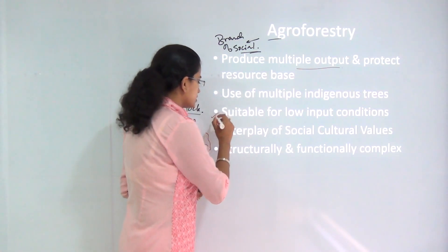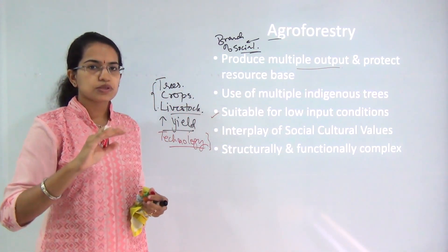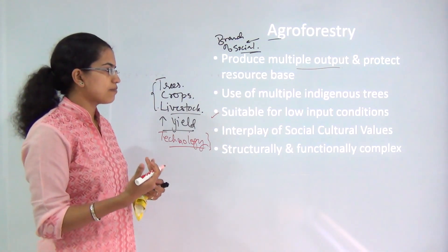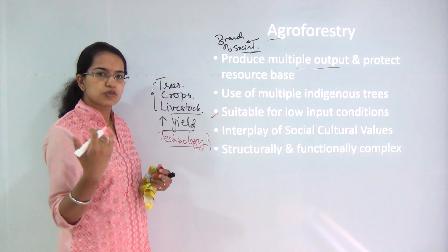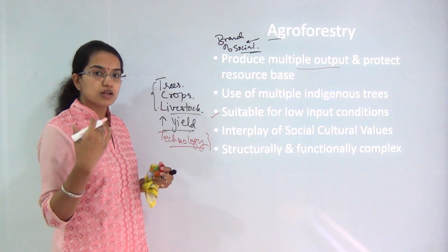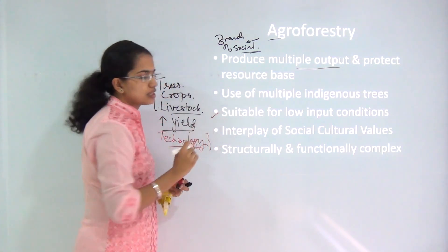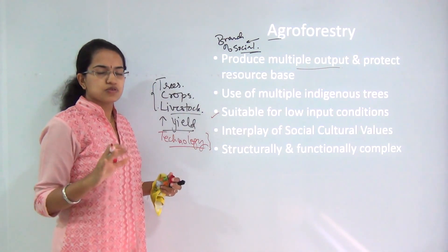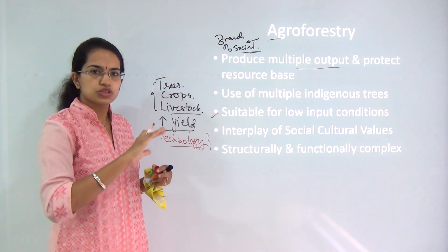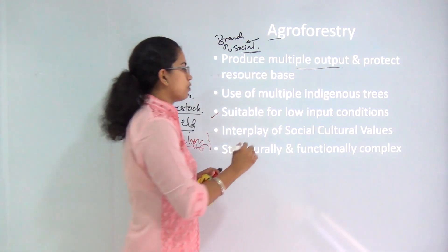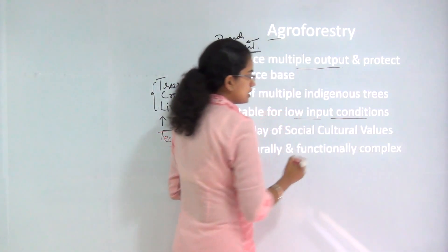The primary reason for requiring low input conditions is that if low input conditions are not maintained, farmers and homeowners will have to bear a lot of cost. The aim of social forestry and agroforestry primarily is to distribute that cost, so it is important that there are low input conditions.